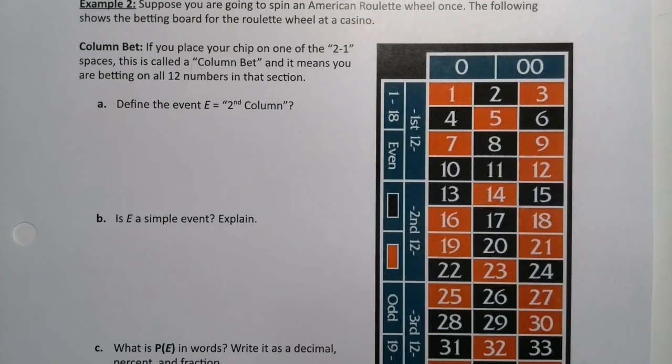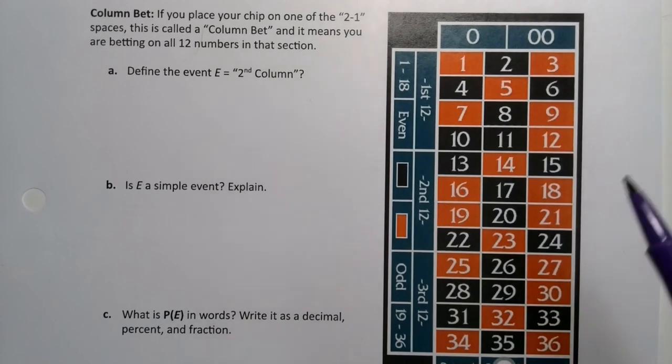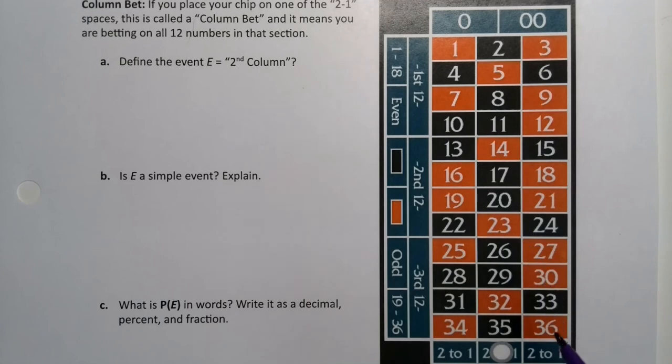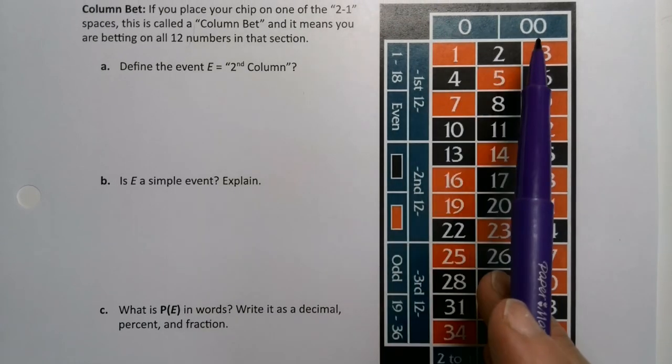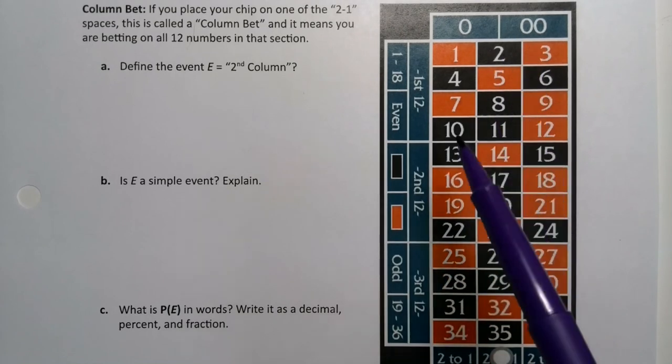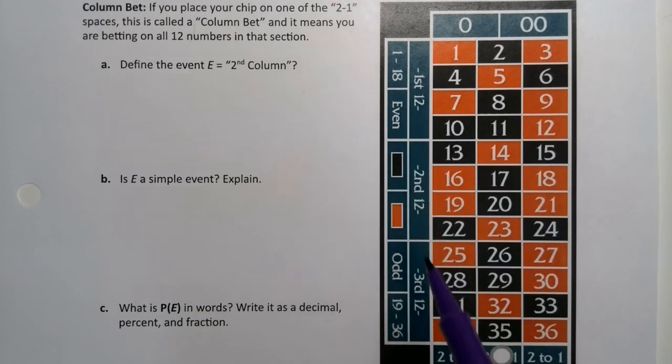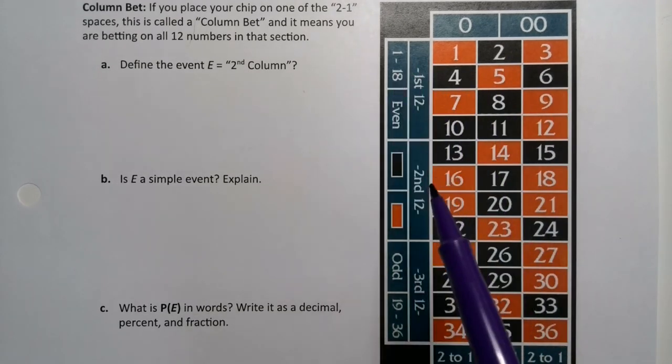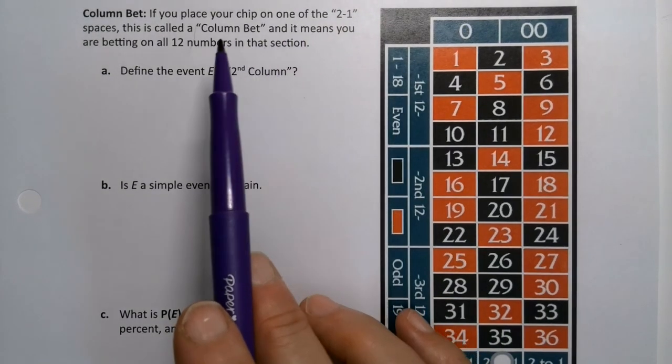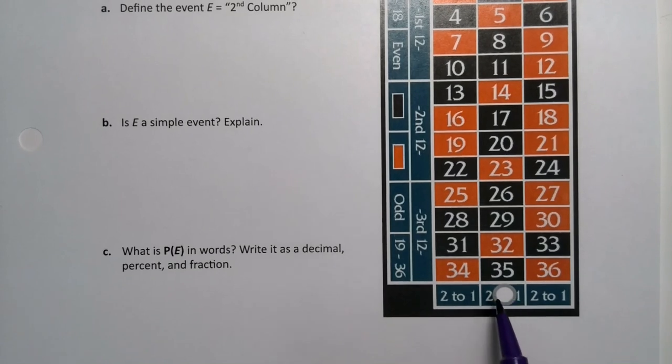Looking at the American Roulette wheel again. This is the American Roulette wheel. This is actually the betting board for an American Roulette wheel. You can see it's got all the numbers, 1 through 36, and the two green spaces, 0 and 00. When you go up to play roulette at a casino, there's a big wheel with a marble flying around it, and this is the board where people place their chips to decide where they want to bet.